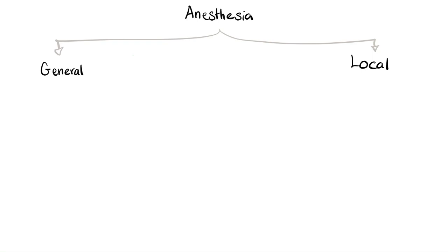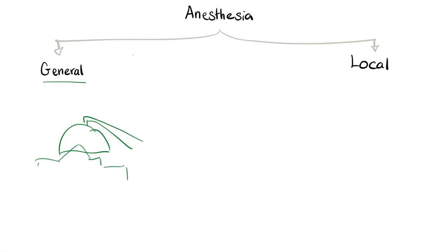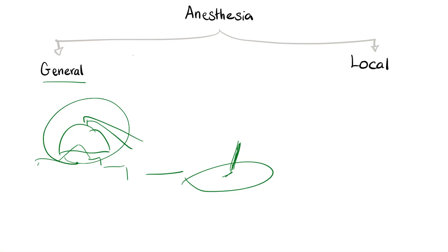We divide anesthesiology into general anesthesia and local anesthesia. General has one purpose — like major surgery — we want to knock you unconscious so that we can operate. And if we want to operate, we better relax your muscles. Because if I'm operating in your abdomen and I touch a muscle, it will twitch, contract, and ruin the surgery. So I need to provide anesthesia and muscle relaxation.